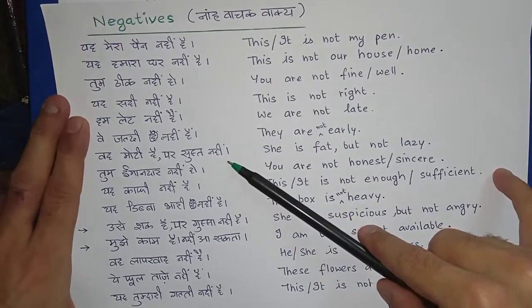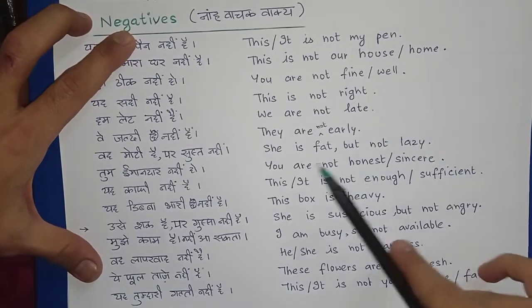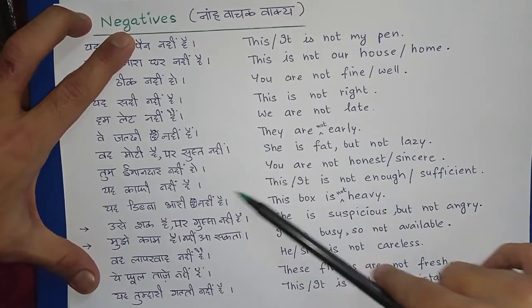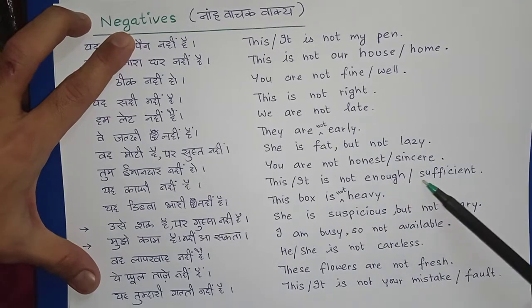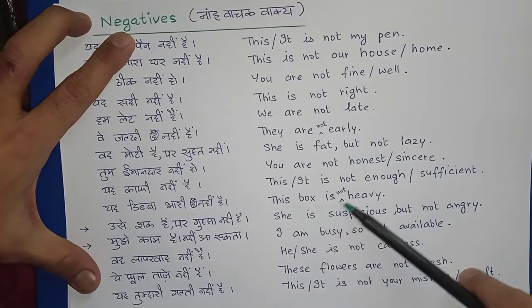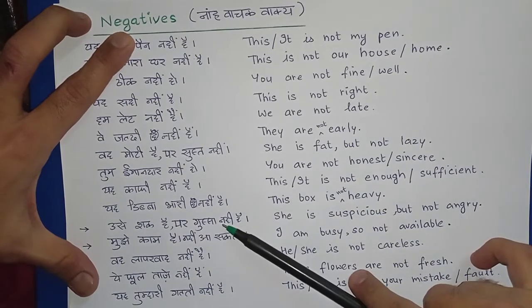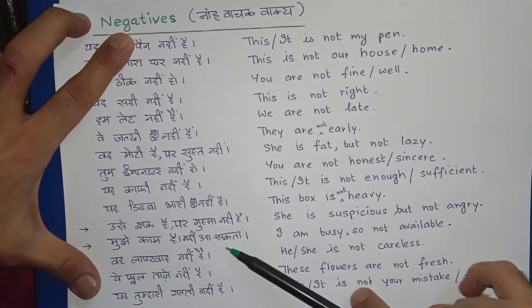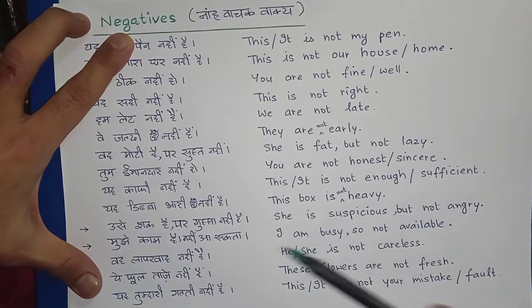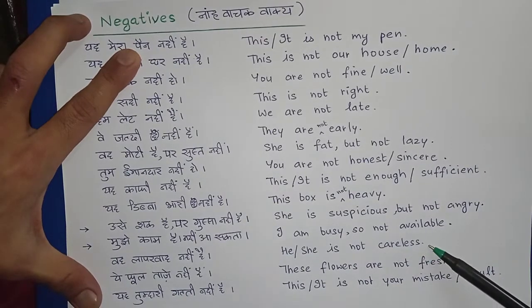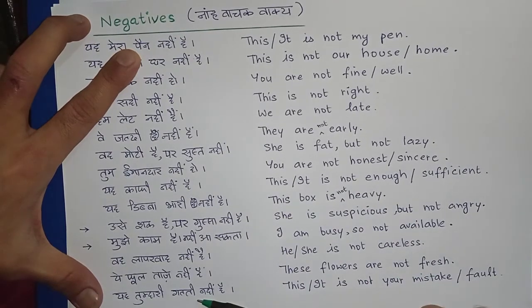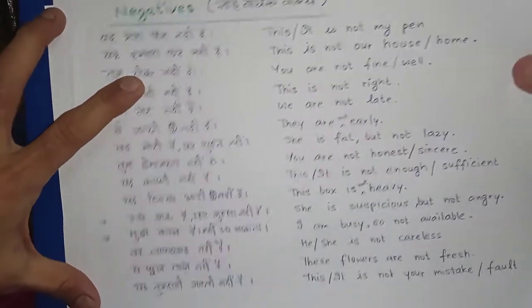Woh moti hai par sust nahi hai — She is fat but not lazy. Tum imaandaar nahi ho — You are not honest. Yeh kaafi nahi hai — This/It is not enough. Yeh dibba bhaari nahi hai — This box is not heavy. Use shak hai par gussa nahi hai — She is suspicious but not angry. Mujhe kaam hai, nahi aa sakta — I am busy so not available. Woh laparwah nahi hai — He/She is not careless. Yeh phool taaze nahi hain — These flowers are not fresh. Yeh tumhari galti nahi hai — This/It is not your mistake or fault.